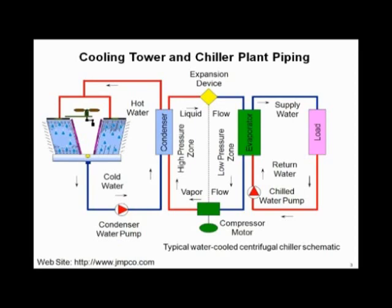Coming out of the compressor, we have a high pressure, high temperature gas going to the condenser. What does a condenser do? It condenses — it takes the BTUs out of the high pressure, high temperature gas and turns it into a high pressure, high temperature liquid. Those BTUs — say 85-degree condenser water in, 95 out — are transferred over to the cooling tower, and the cooling tower rejects those BTUs out to the atmosphere.